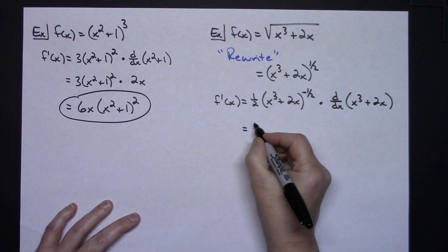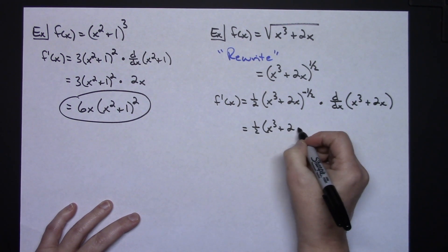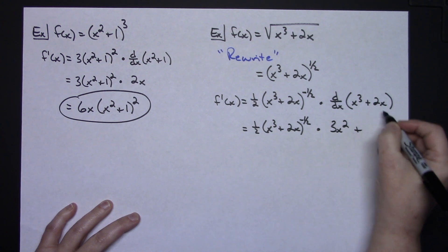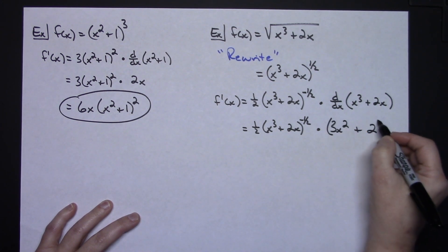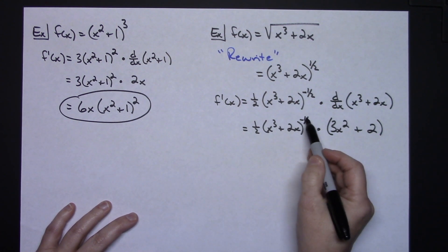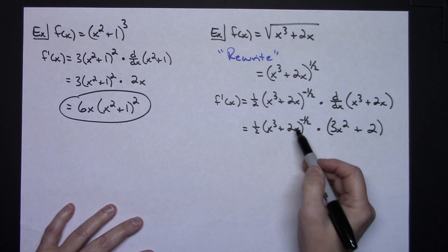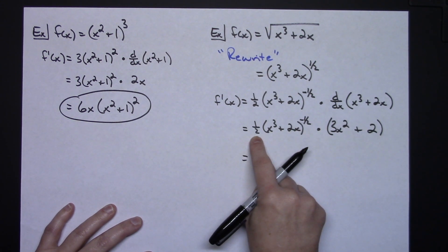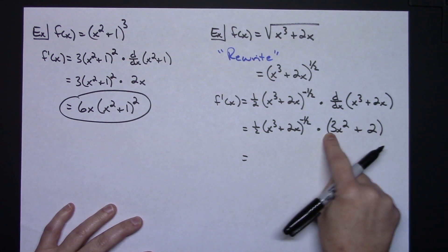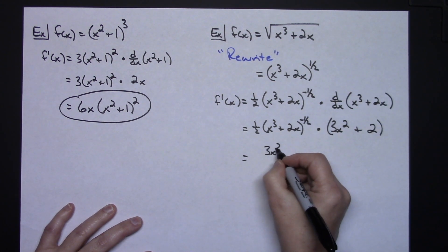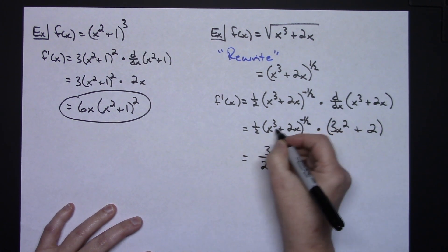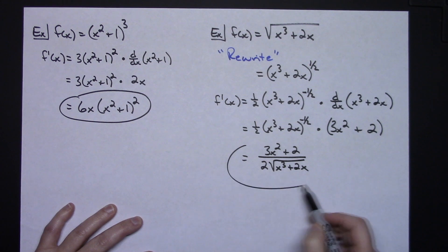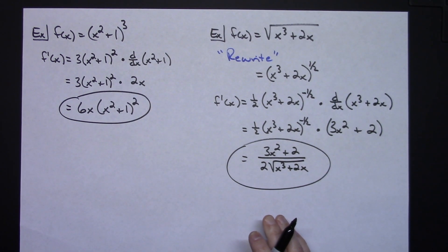Carrying the one-half and x cubed plus 2x to the negative one-half forward, I now calculate the derivative of the inside: using power rule gives 3x squared plus 2. Since I don't want a negative exponent, I move the factor with the negative one-half to the denominator and rewrite it as a square root. The final simplified answer is 3x squared plus 2, all over 2 times the square root of x cubed plus 2x.